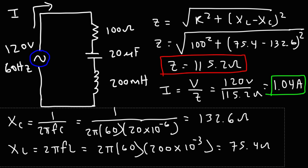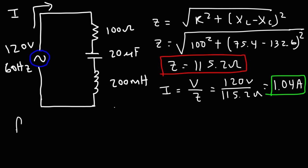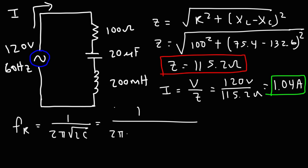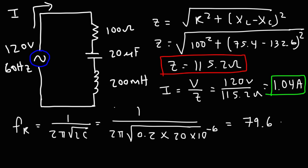Now let's calculate the frequency at which the inductive reactance equals the capacitive reactance — that frequency is known as the resonant frequency. It's equal to 1 over 2π times the square root of LC. L is 200 millihenries (0.2 henries) and C is 20 times 10 to the minus 6 farads. You should get 79.6 hertz. At that frequency, XL will equal XC.